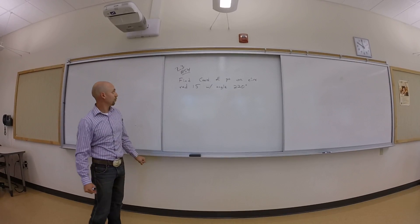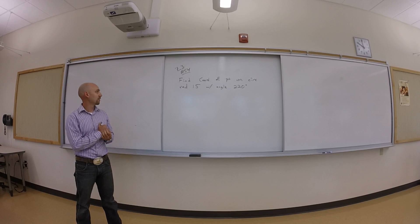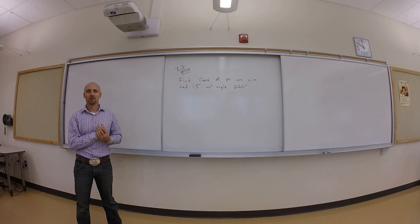So let's see if we can do 54 and 7.3. We're supposed to find the coordinates of a point on a circle, radius 15 with angle 220 degrees.